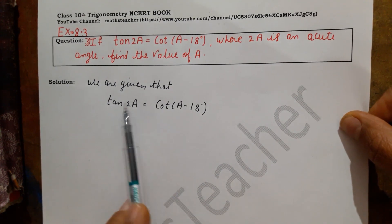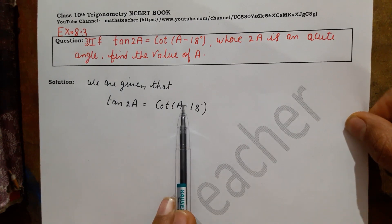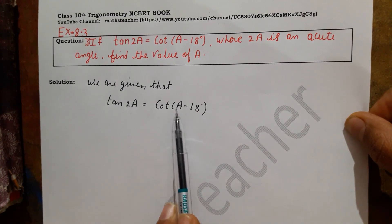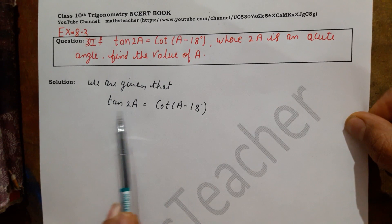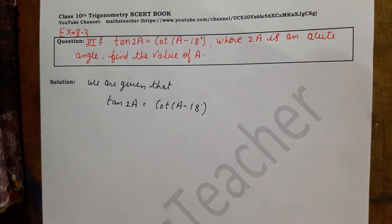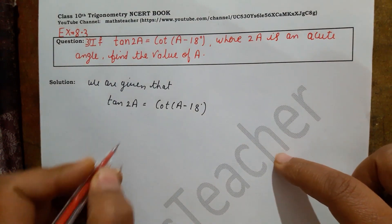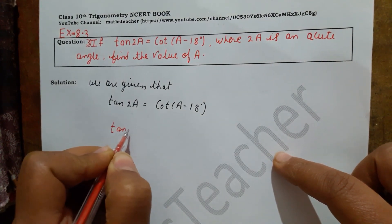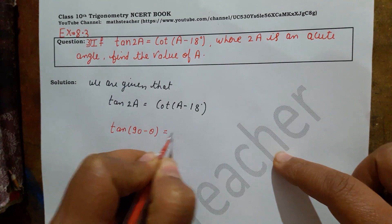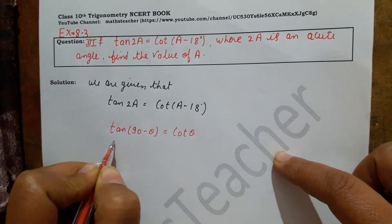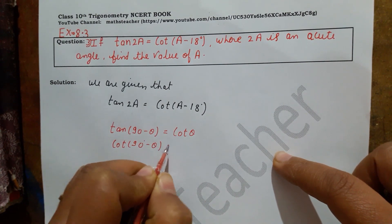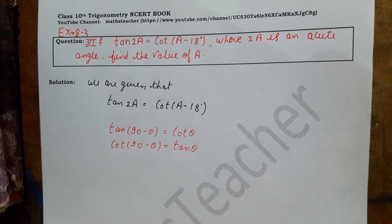We use the value of complementary angles. We can change the value of either tan or cot. In trigonometric ratios, the complementary angle relation is: tan(90 minus theta) equals cot theta. That is one relation. And the other relation is: cot(90 minus theta) equals tan theta.